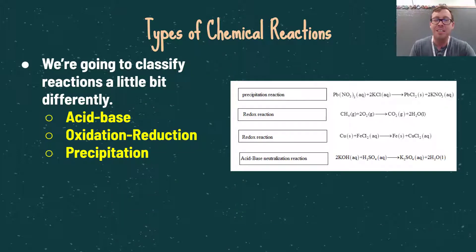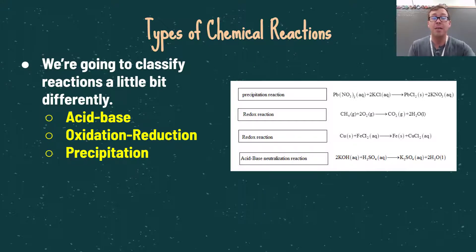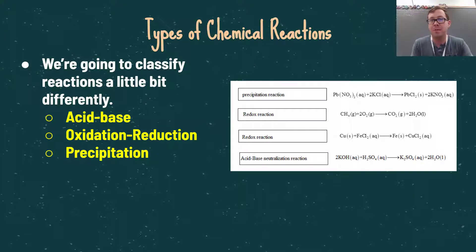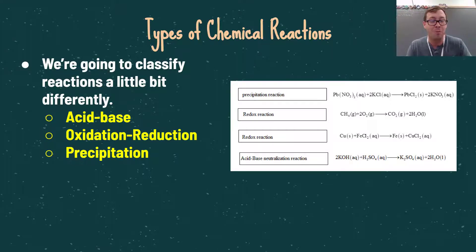For this class we're going to classify reactions a little bit differently. Instead of the five categories we've talked about previously, we're now going to classify them into acid-base reactions, oxidation-reduction reactions, or precipitation reactions. There is a lot of overlap between these different types — you may see an acid-base reaction that is also a double displacement reaction, or an oxidation-reduction reaction that is also a combustion reaction.